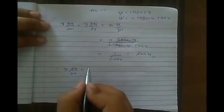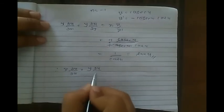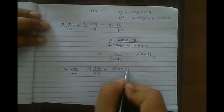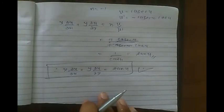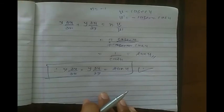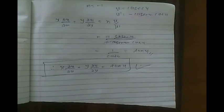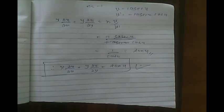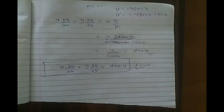Hence x ∂u/∂x + y ∂u/∂y = tan(u), and the statement is proved. Similarly we can solve problems related to Modified Euler's Theorem. In the next part we will discuss various corollaries regarding Euler's Theorem and Modified Euler's Theorem, and go deeper into more examples.